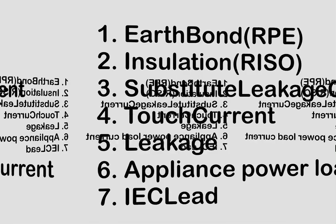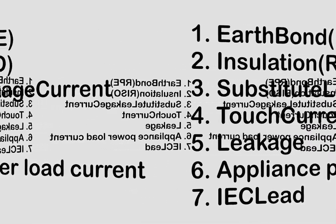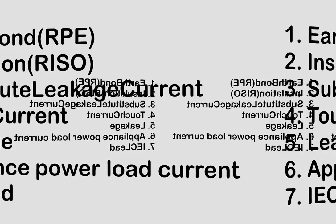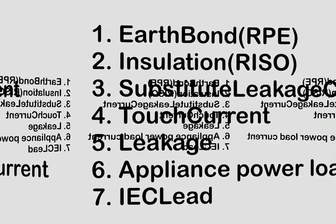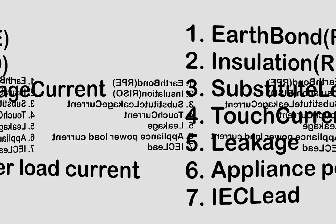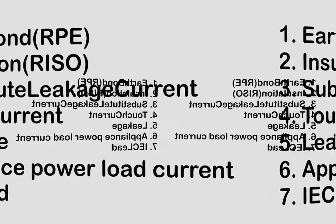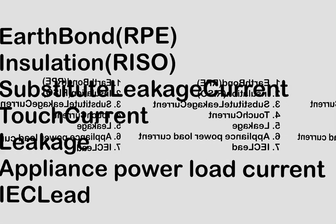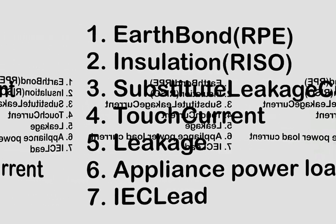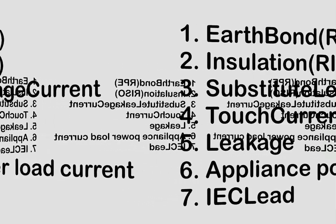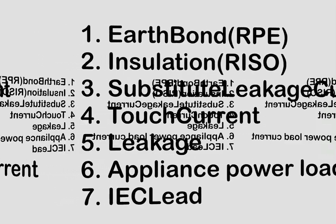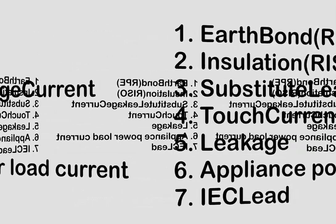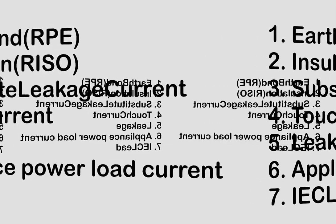Now we are going to discuss what we need to do during the PAT test. There are seven things to carry out. First is the earth bond test, also called the RPE test. The earth bond test measures the resistance of the earth from the pin of the main supply plug to the earth body of the appliance, and indicates how good the connection is. Second is the insulation test, with the shortcut name RISO. This test measures the total resistance between any two points separated by electrical insulation.